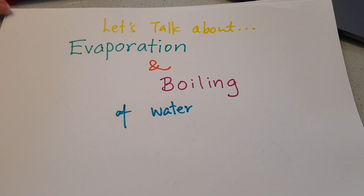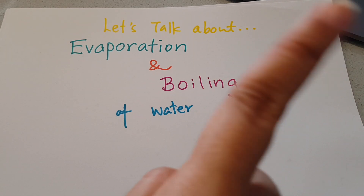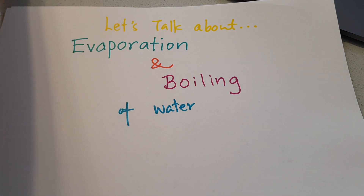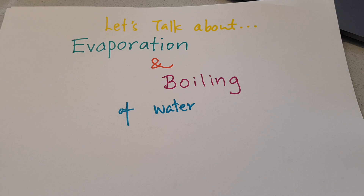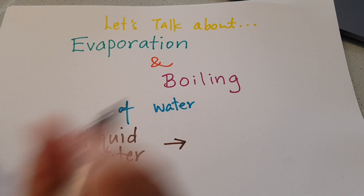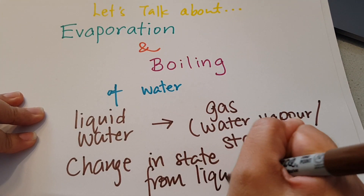For evaporation and boiling of water, what is the main similarity? Many of you have seen my other videos on the difference between water vapor and steam, the water cycle, and the boiling curve. So if you have learned about the states of water, you will know that the similarity for evaporation and boiling is the change of state — water in liquid state turns into water in gaseous state. There is a change in state from liquid to gas.